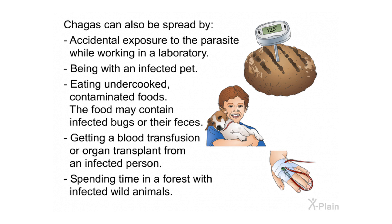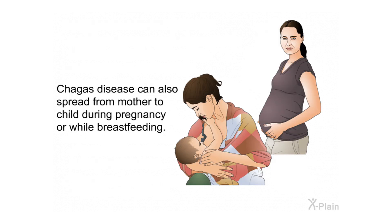Other transmission routes include eating undercooked contaminated foods that may contain infected bugs or their feces, getting a blood transfusion or organ transplant from an infected person, spending time in a forest with infected wild animals, or transmission from mother to child during pregnancy or while breastfeeding.